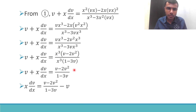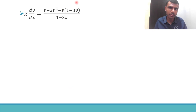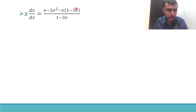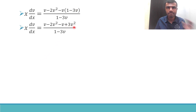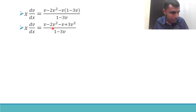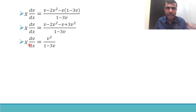Taking LCM, the (1 minus 3v) gets multiplied, giving v minus 2v² minus v(1 minus 3v), all over (1 minus 3v). Expanding: minus v times 1 is minus v, minus v times minus 3v is plus 3v². So v minus v cancels, and 3v² minus 2v² is just v². Therefore x·dv/dx equals v²/(1 minus 3v).